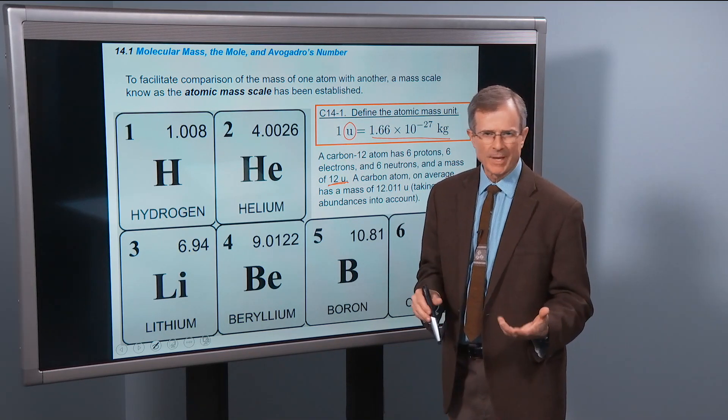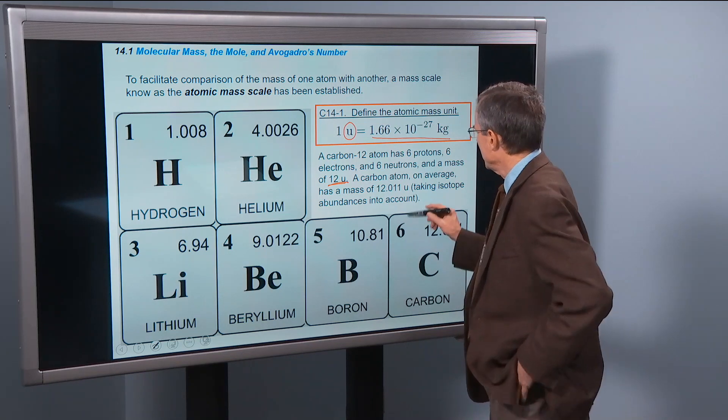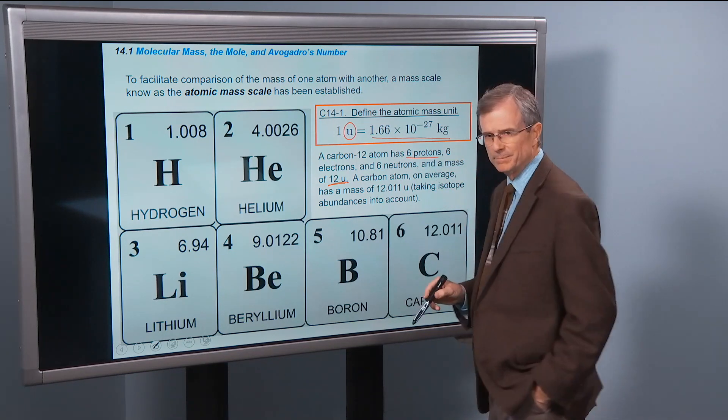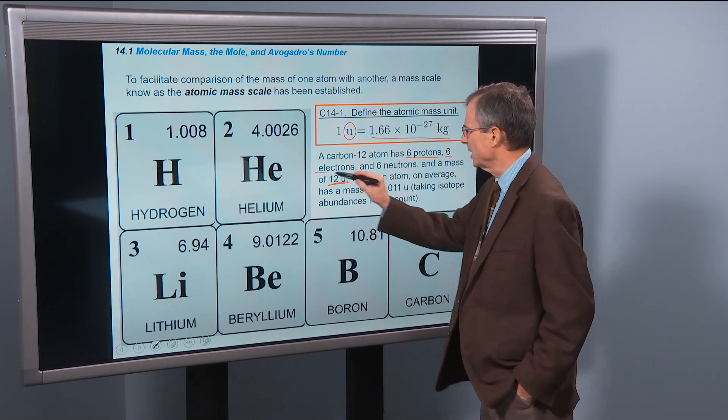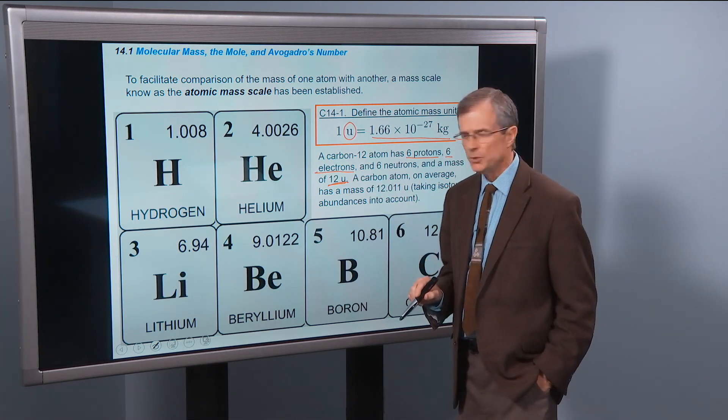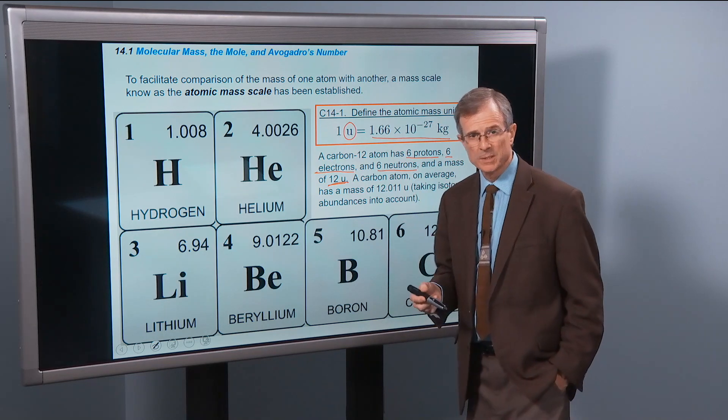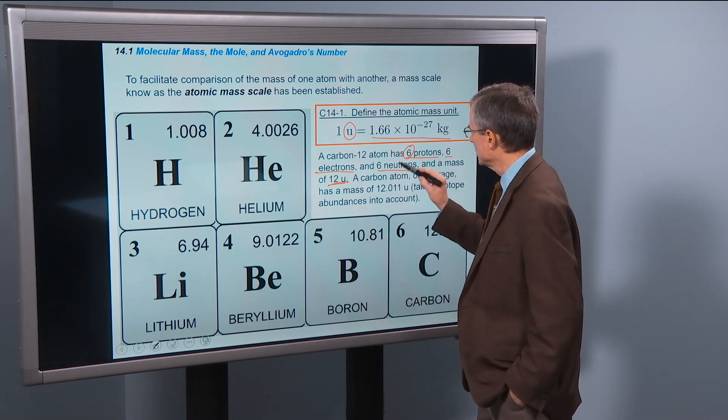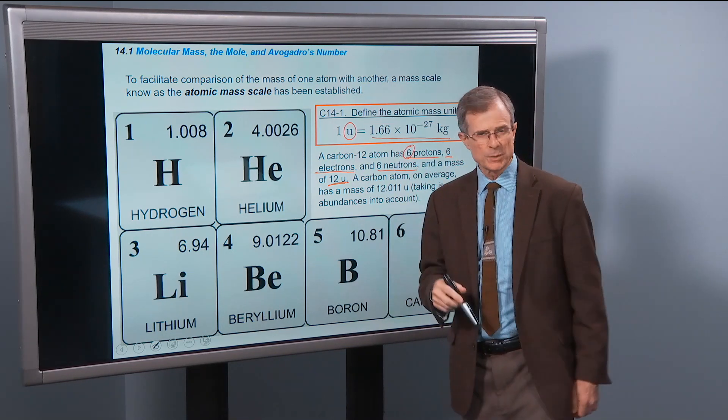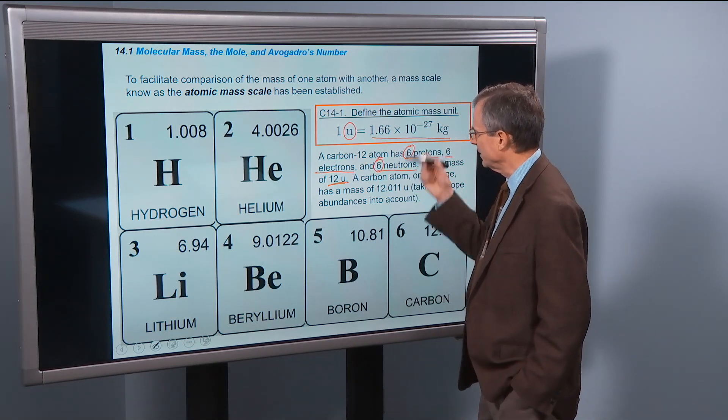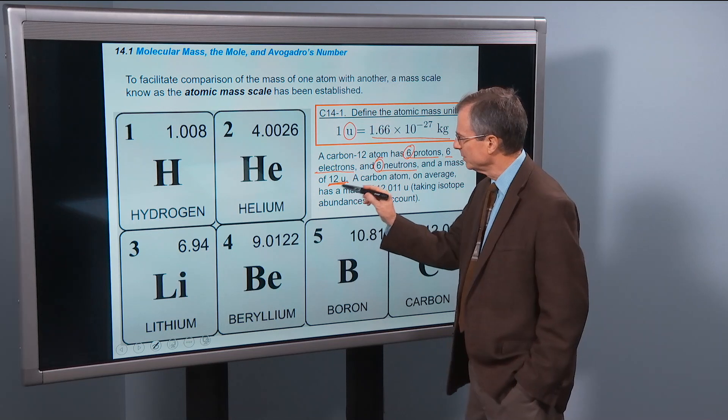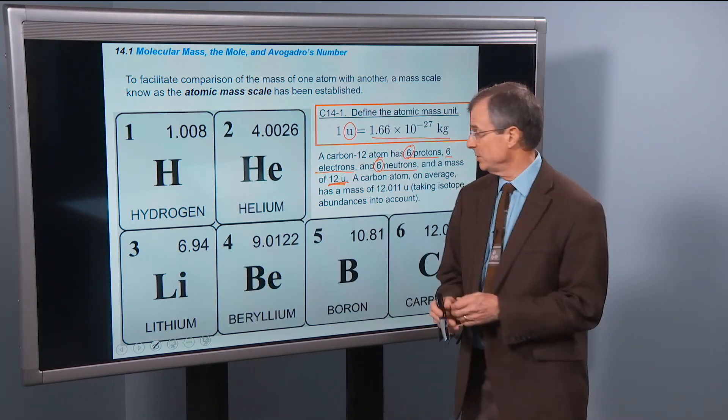And you might ask, what's a carbon-12 atom? The answer is it has 6 protons, 6 electrons to match the 6 protons so it will be electrically neutral, and it also has exactly 6 neutrons. The 6 protons plus the 6 neutrons make up the 12U, 12 atomic mass units.